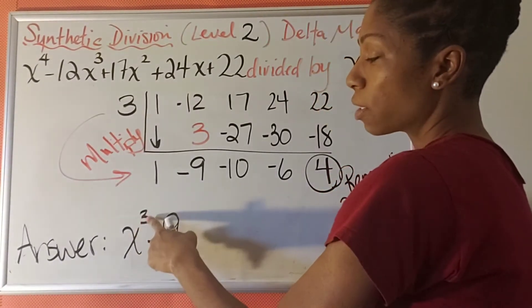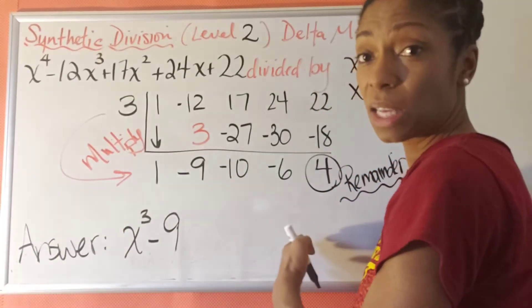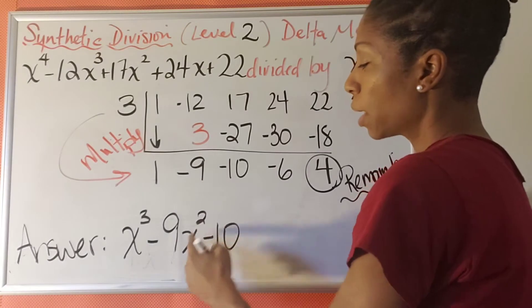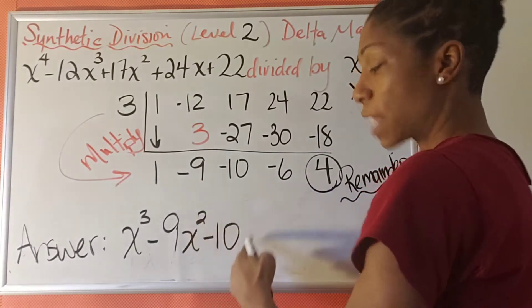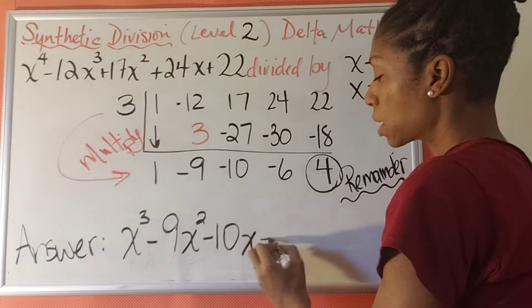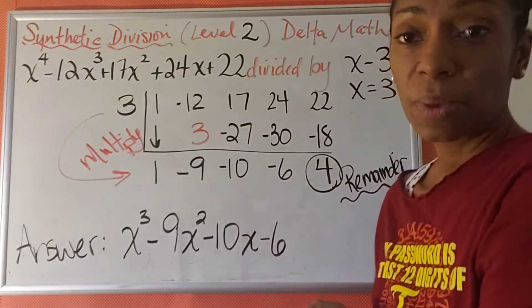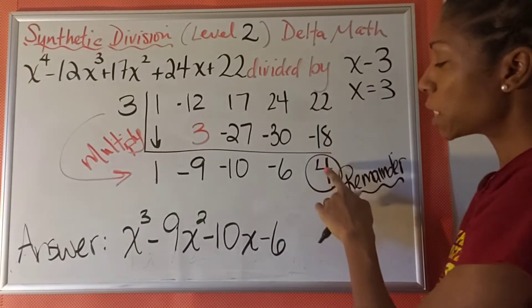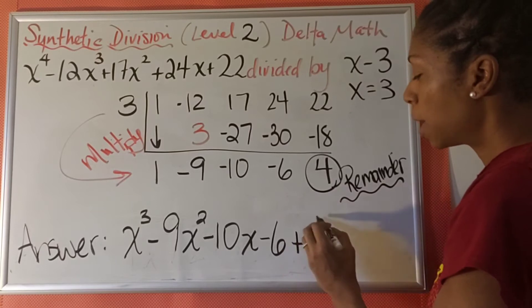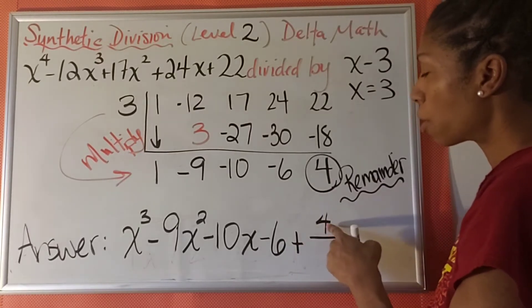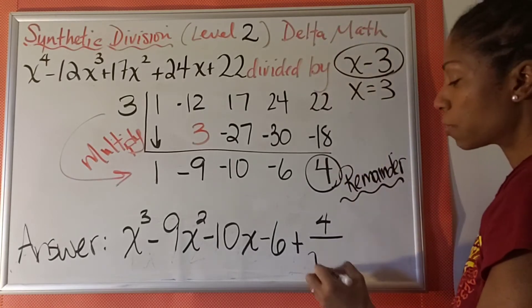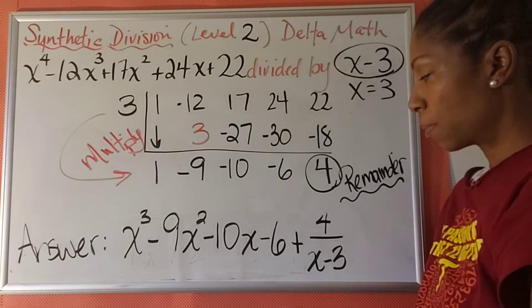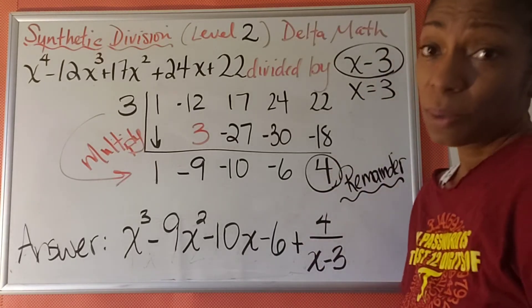After x cubed is x squared — we're just going to keep decreasing. So minus 9x squared, then minus 10x, then minus 6 with no x variable at all. Now what do we do with this remainder? Since it's positive, we're going to put a plus sign and then create the fraction 4 over x minus 3. That's our final answer. The remainder is always over the binomial that you're dividing by.